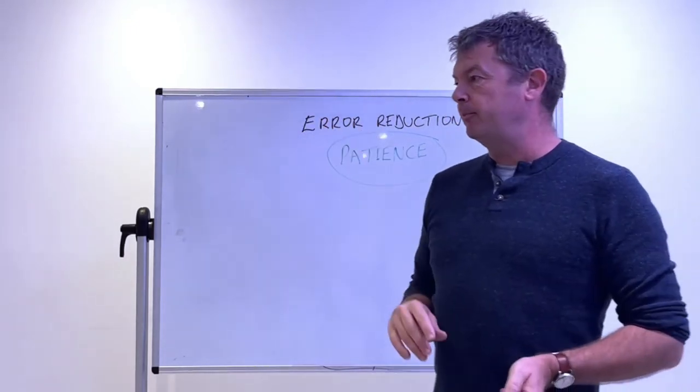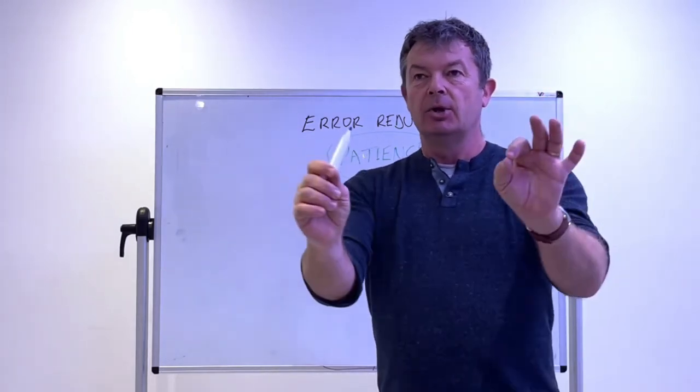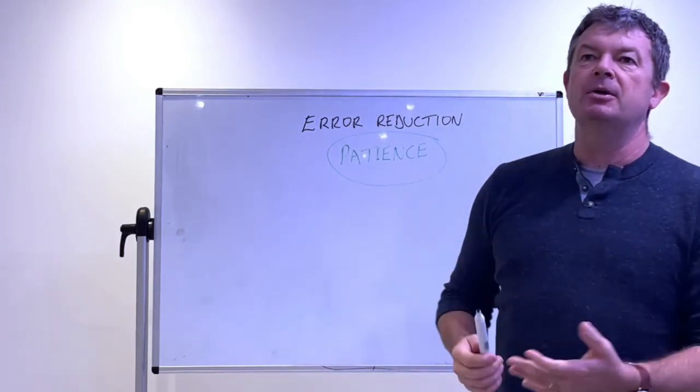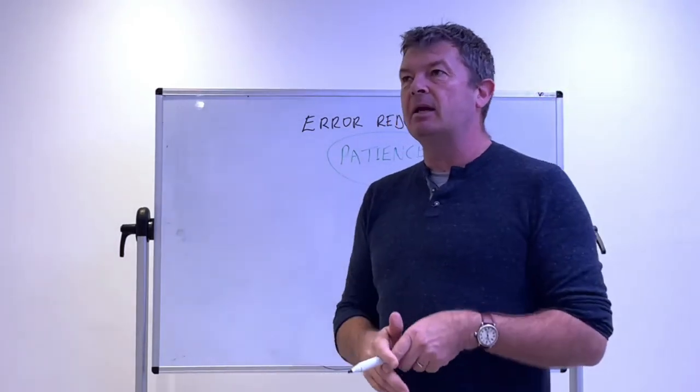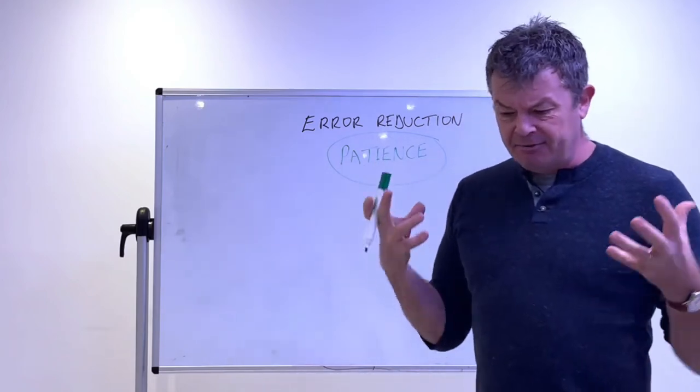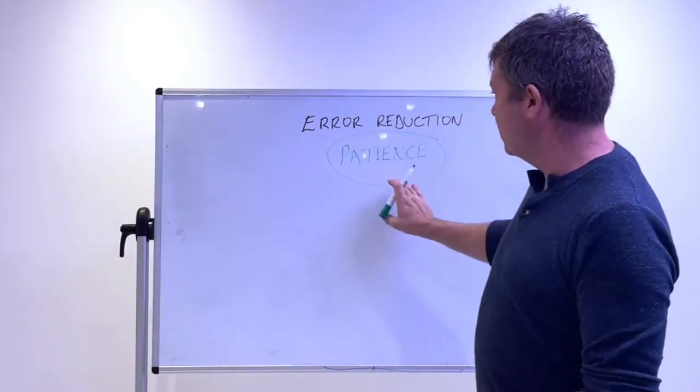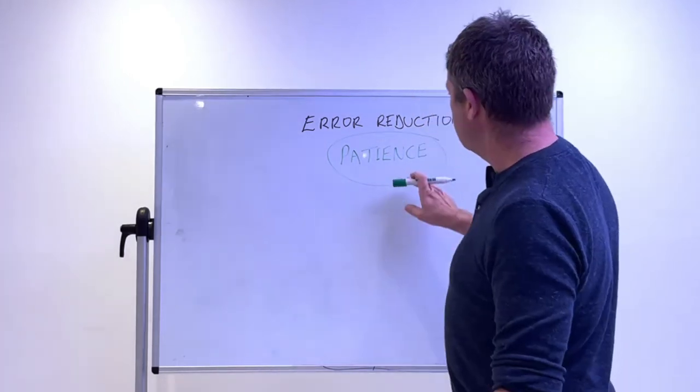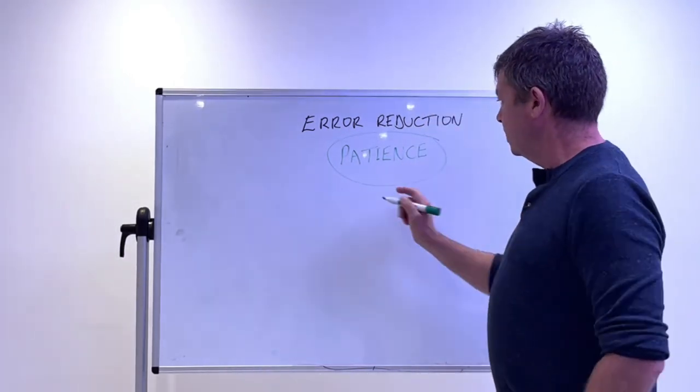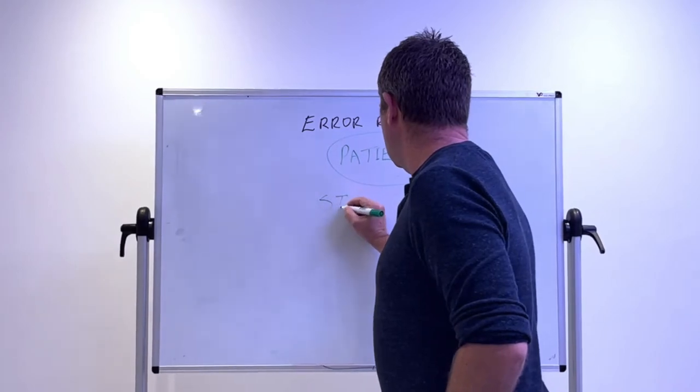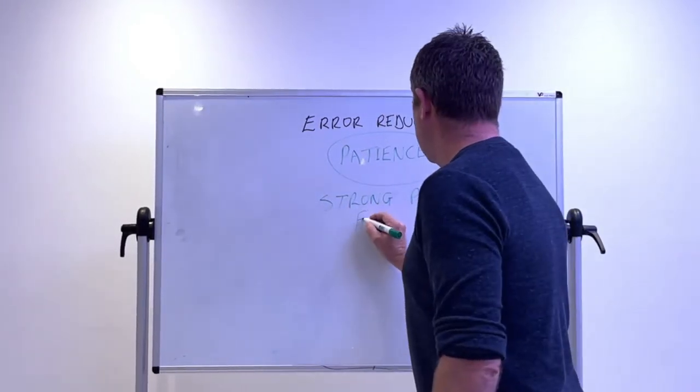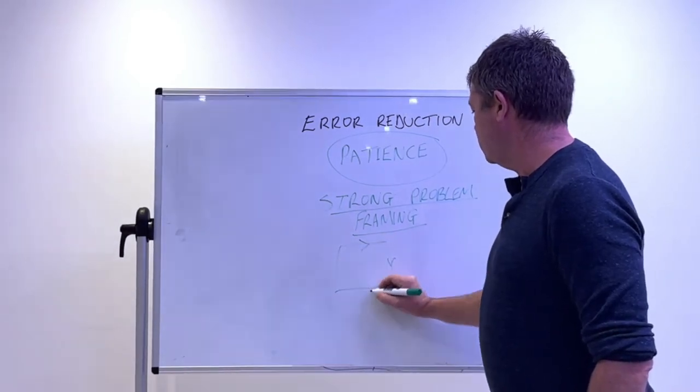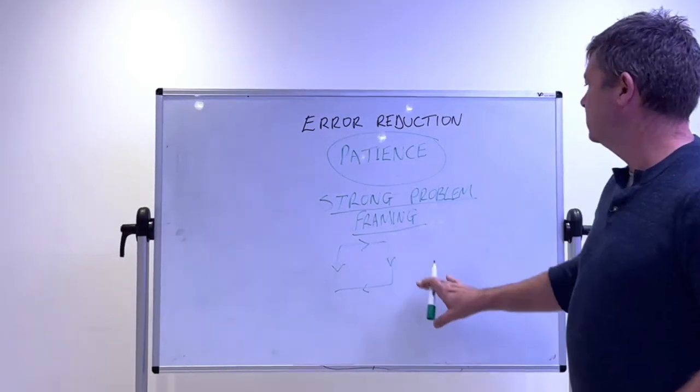If we're in a patient frame of mind, we're looking at how we construct the point with a good storyboard of play. What we're doing is we are strong framing the problem, not weak framing the problem. It's my backhand. My opponent's better than me. Very weak formulation of a problem. We want the storyboard of play. Patience requires strong problem framing.